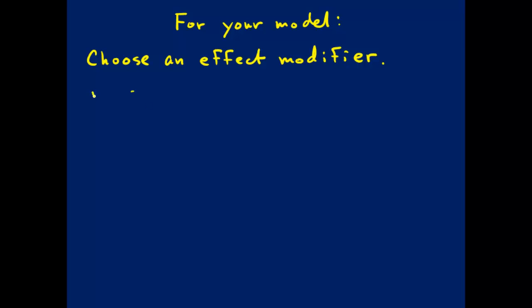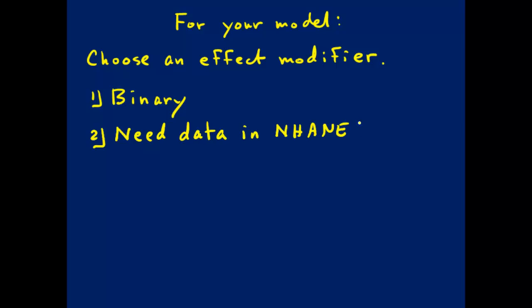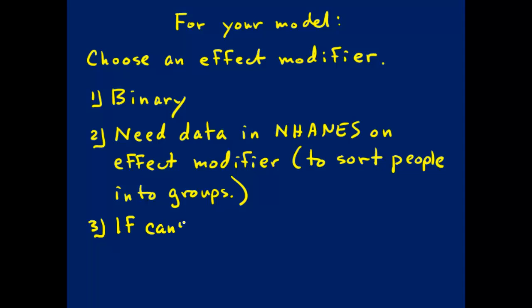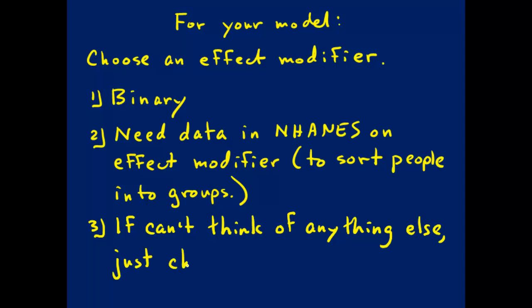Your effect modifier should have a few characteristics. First, choose a binary effect modifier to keep things simple. You'll need data for it in the NHANES dataset. Because we're just learning how to use this tool, I don't want you to spend too much time thinking of a potential effect modifier unless you're motivated to do so. If you can't think of an effect modifier that makes sense based upon the reality of what you're modeling, you can simply choose biological sex and code it male-female to use within your model to learn how to test for effect modification.